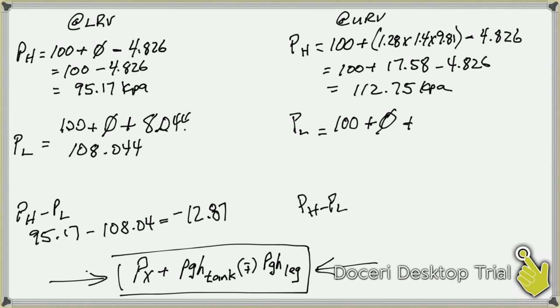And then because again the capillary is above the transmitter, it's positive this time, 8.044, and that gives us a number of 108.044.